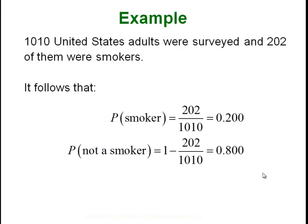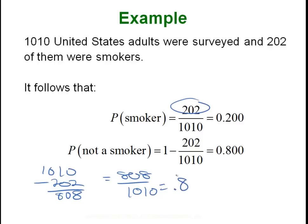Here's an example: 1,010 adults were surveyed and 202 of them were smokers. The probability that somebody is a smoker is good over total — 202 over 1,010, or .2. The probability that somebody is not a smoker, which is the complement, is just 1 minus that probability. If 202 smoked then 1,010 minus 202 equals 808 non-smokers, and 808 over 1,010 gives you .8. Notice that when you add these two numbers together you get 1 — that's always the case.